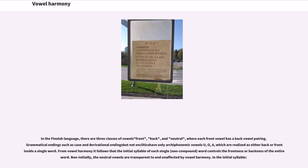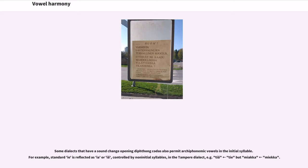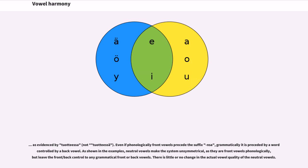Some dialects that have a sound change opening diphthongs also permit archiphonemic vowels in the initial syllable. Even if phonologically front vowels precede the suffix -nsa, grammatically it is preceded by a word controlled by a back vowel. Neutral vowels make the system unsymmetrical, as they are front vowels phonologically but leave the front/back control to any grammatical front or back vowels. There is little or no change in the actual vowel quality of the neutral vowels.